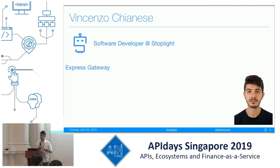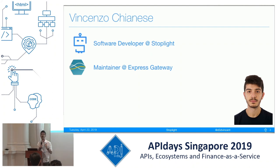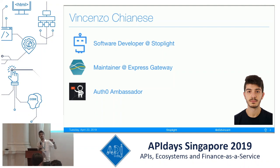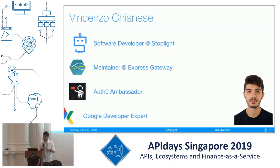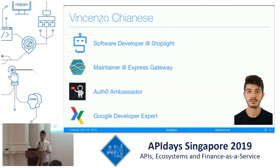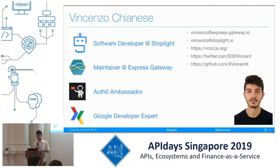I'll be showing some things about Stoplight later. I'm also the maintainer of Express Gateway — it's an open source API gateway written in JavaScript, running on Node. It's an alternative to Kong and Tyk, a tiny micro gateway which might be helpful for you. I'm also an Auth0 ambassador — Auth0 is a company focused on security, and they've been sponsoring my travel here. Last but not least, I was awarded as a Google Developer Expert this December.